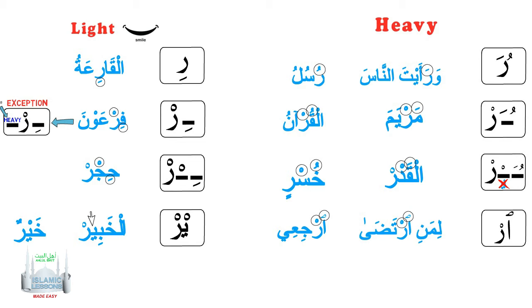This is what it looks like in summary. If the Ra is associated with a Kasra, it will read light, apart from the exception. If the Ra is associated with a Dhamma, Fathah, or Hamzatul Wasil, it will be heavy.